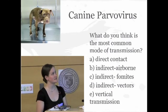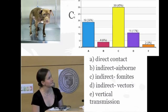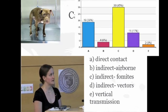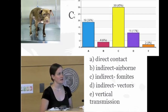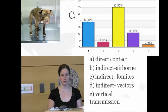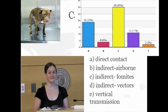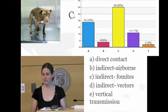Polling results for parvovirus showed 45% indirect fomite, 29% direct contact, 17% indirect vector, 6% indirect airborne, and 3% vertical transmission. Important modes include direct contact, indirect fomite, and vector transmission. One important factoid: parvo is a very hardy virus and can last in the environment for months, up to even a year. So if a puppy comes in with parvovirus in March and another susceptible puppy comes in August, there's still a chance that puppy can be infected. Proper disinfection techniques definitely lessen the risk, but it remains a possibility.